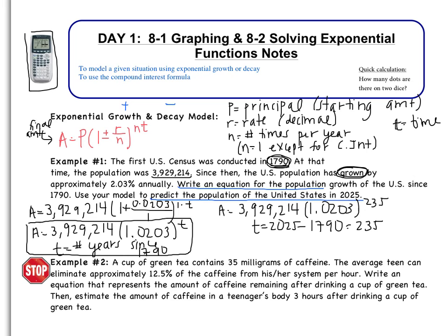Now you should be able to put this in the calculator exactly as it appears. Remember that the 1.0203 needs to be raised to the 235th power. Then you multiply by the 3,929,214. When you do that, you get the population of 2025 to be about 441,935,660 people. So this is what we predict the population to be in 2025. So this is how a lot of questions are going to look. You're going to have to write a model and then you're going to have to use it.